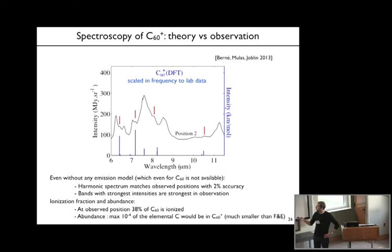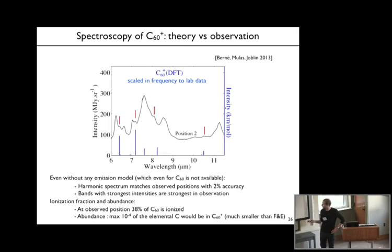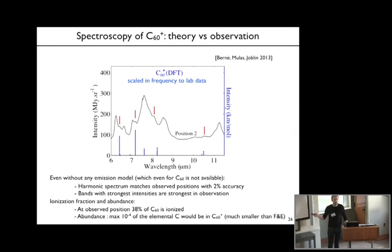Based on this observation you can derive an ionization fraction of C60: we find that about 38% of the C60 is ionized. The abundance that you can derive is that about 10^-4 of the elemental carbon would be in C60+. This is much smaller than what is reported by Foing and Ehrenfreund, but their detection concerns the diffuse interstellar medium—a very different environment.